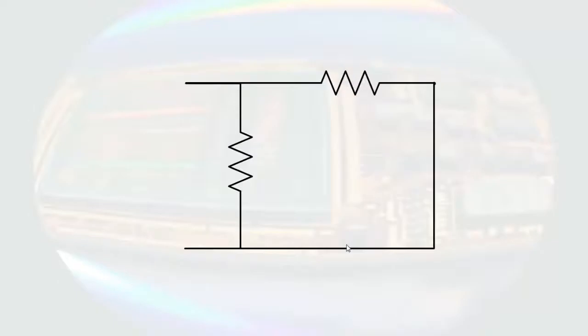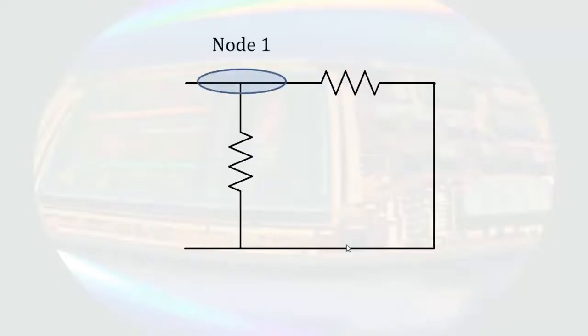When components are side-by-side, this is very easy to see. However, the same confusion happens with language when people substitute the phrase 'side-by-side' for 'share two nodes.' For example, these two resistors, though they are not side-by-side, still share two nodes. Since there are only two nodes in the circuit, there is still only one voltage, so these components are in parallel.